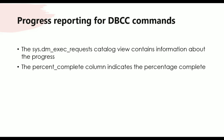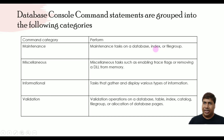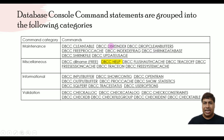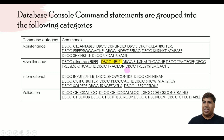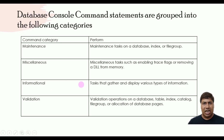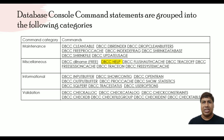Database Console Command statements are grouped into the following categories: Maintenance, Miscellaneous, Informational, and Validation. Maintenance covers tasks on databases such as indexes and file groups — for example, DBCC CLEANTABLE. Miscellaneous covers tasks such as enabling trace flags or removing a DLL from memory — for example, DBCC HELP.